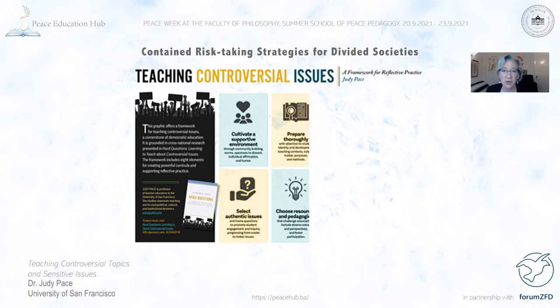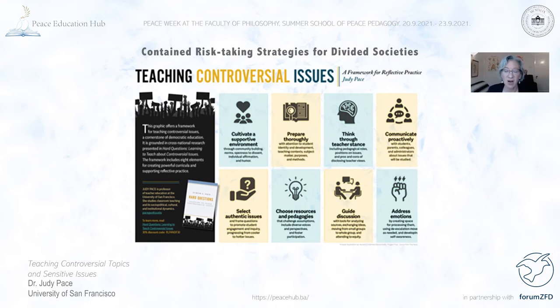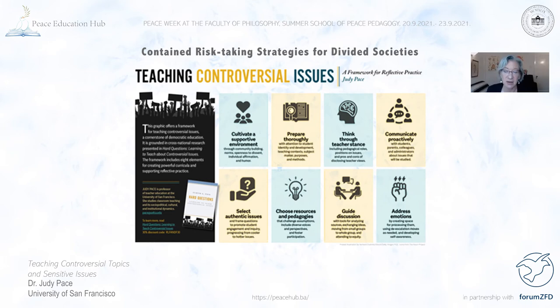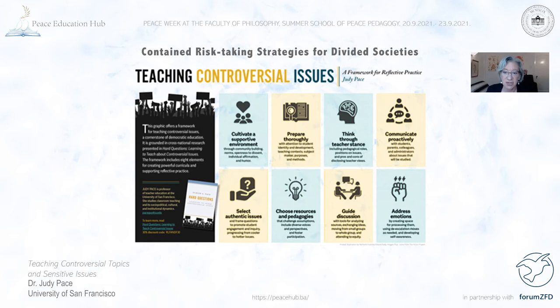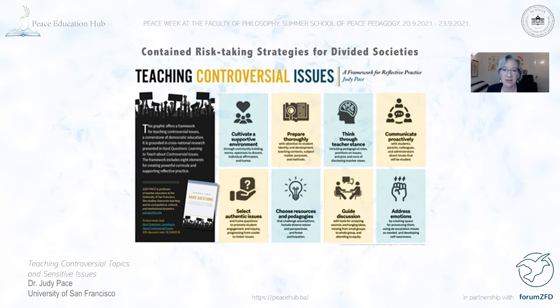The teacher educators taught various strategies that fit within these eight elements. The first element is cultivating a supportive environment. The second is selecting authentic issues to bring into the classroom. The third is preparing thoroughly — knowing your subject matter, your students, and the context in which you're teaching. Fourth is choosing resources and pedagogies thoughtfully. Fifth is thinking through your own stance on the issues as a teacher. Sixth is guiding discussion so it is productive and students can exchange ideas. Seventh is communicating proactively with students, parents, colleagues, and administrators to build support. Eighth is addressing emotions by creating space for them and using strategies to de-escalate when needed.